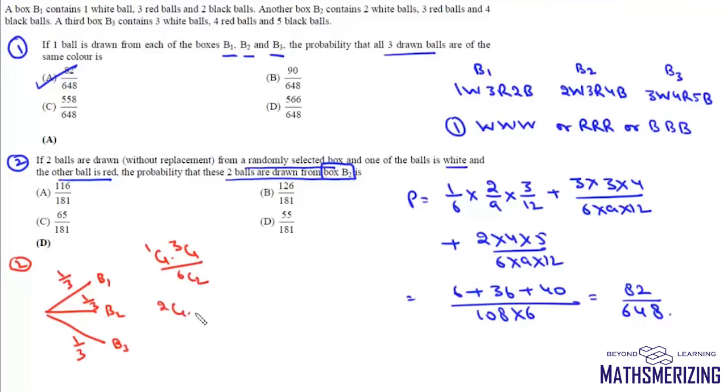it will be 2C1 into 3C1 upon 9C2 and here will be 3C1 into 4C1 upon 12C2. Now this is 3 by 15 and 3 by 15 is 1 by 5 and this is 6 by 36